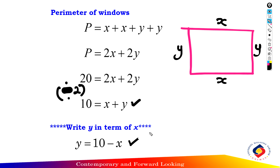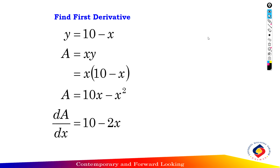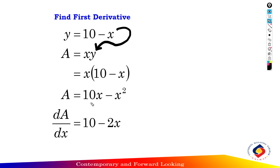Using the first method, express y in terms of x. Step 2: find the first derivative. The area of the rectangle equals x times y. Substitute y into the area formula: area equals x times (10 minus x), so the area equals 10x minus x squared. This gives the area as a function of x.